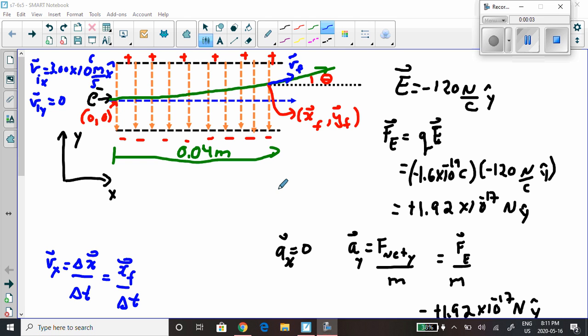Alright, so thanks for asking the question Sean, really appreciate it. Great question. So we have this area here with an electric field, I've shown it with these dashed orange arrows. The electric field is going down, so the electric field is negative 120 newtons per coulomb y-hat. And into this electric field, this electron is going to be shot in, and the electron is shot in from a spot right here that it enters the electric field.